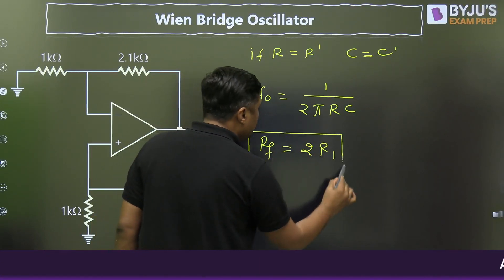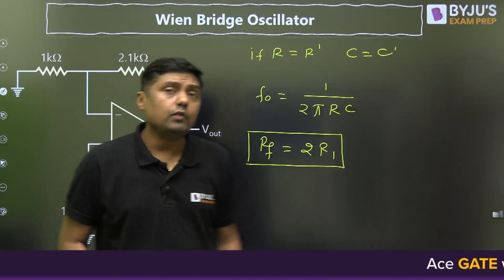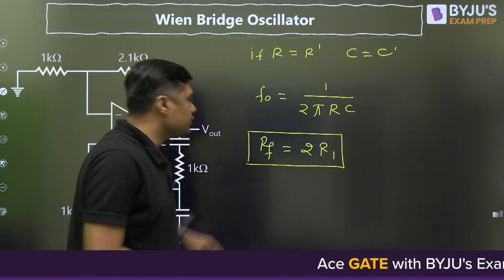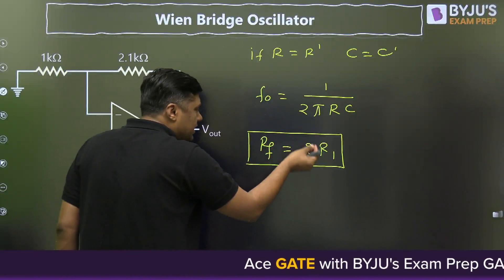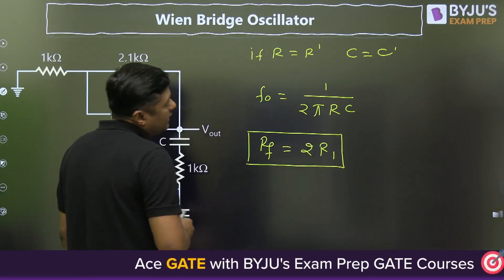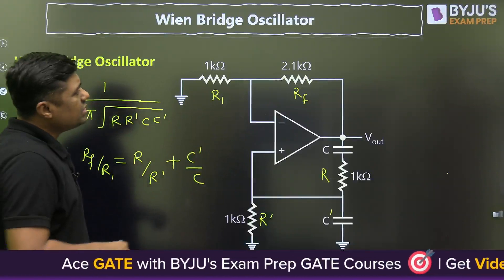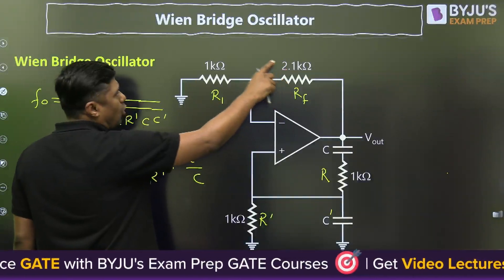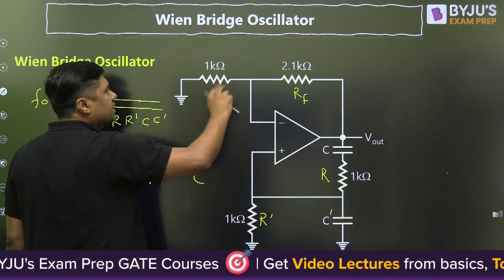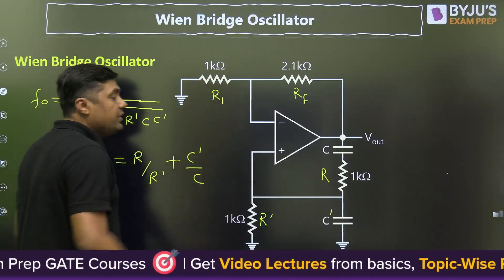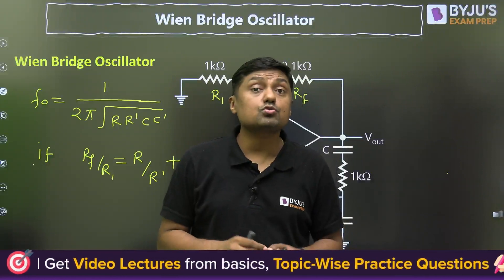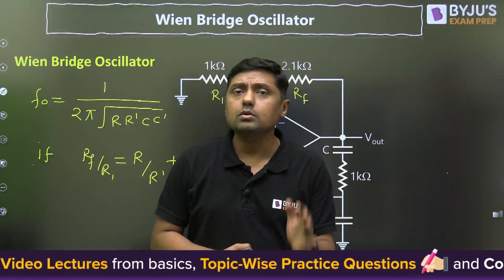RF equal to 2 times R1 holds under ideal conditions. When considering practical conditions, RF should be slightly greater than 2 times R1. In this question, RF is 2.1 kilo-ohm and R1 is 1 kilo-ohm, which means RF is slightly greater than 2 times R1 and the condition is satisfied.